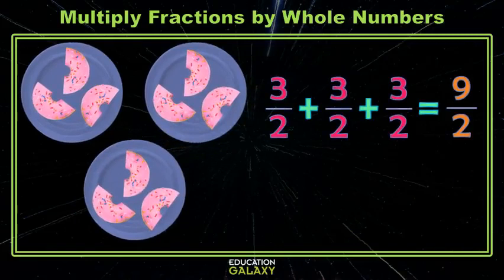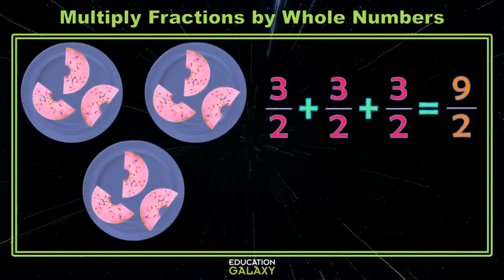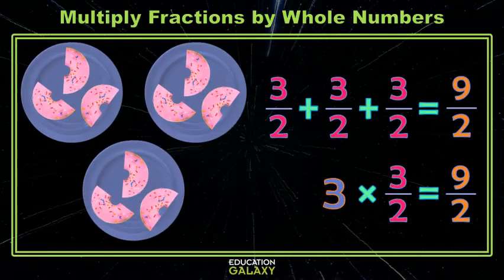So, can we use multiplication? Yes, yes we can. We have three three halves. So we can say three times three halves. And we'll still get nine halves. Now, back to the question. How does this multiplying work?